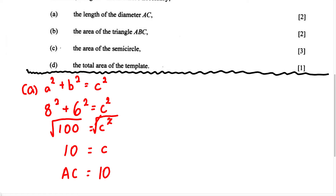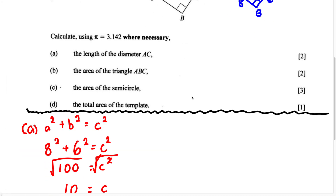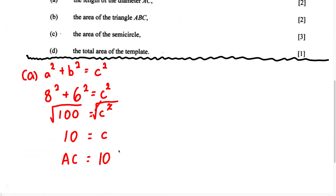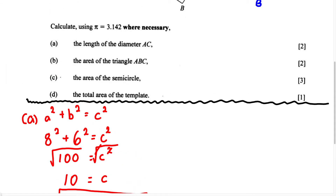A length always has a unit, but in this situation they don't give us any unit — they just said AB equals 8 and BC equals 6. Therefore we write it as 10 units. The length of the diameter AC is 10 units.